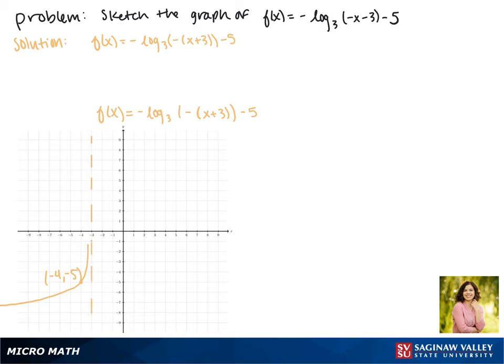Notice that our asymptote shifted along with our function, and this is the graph of our function.